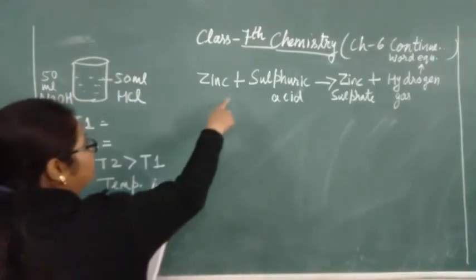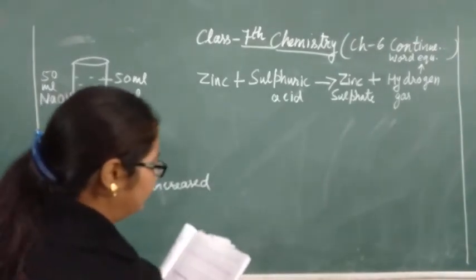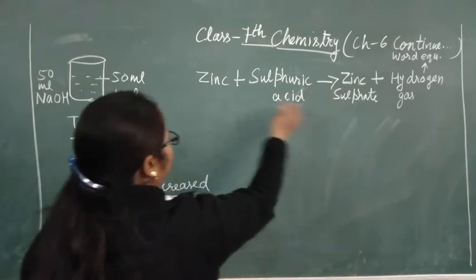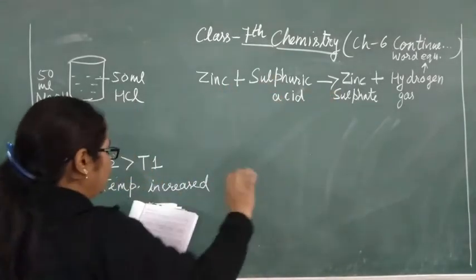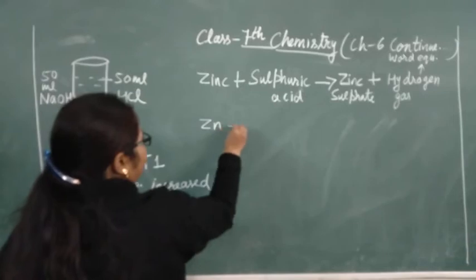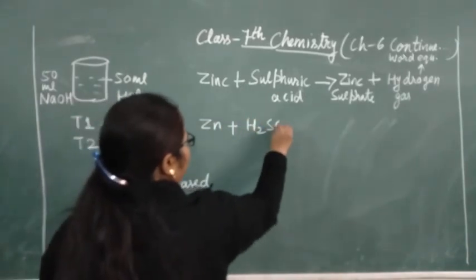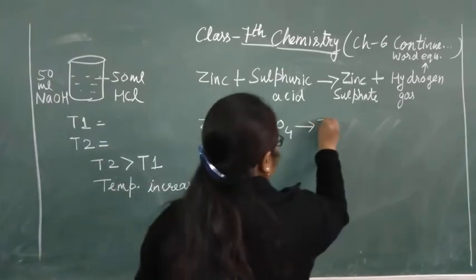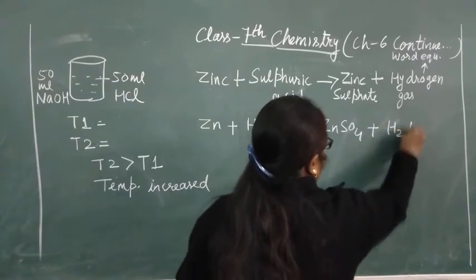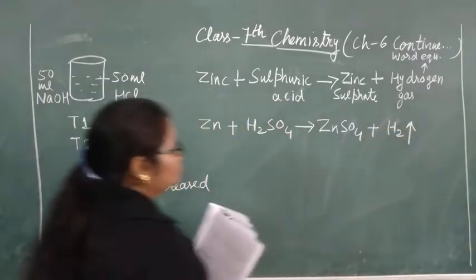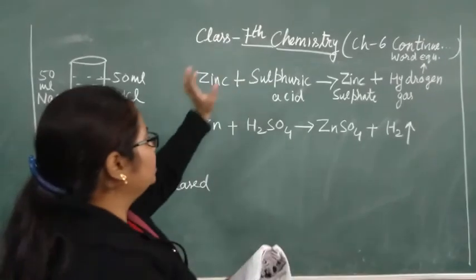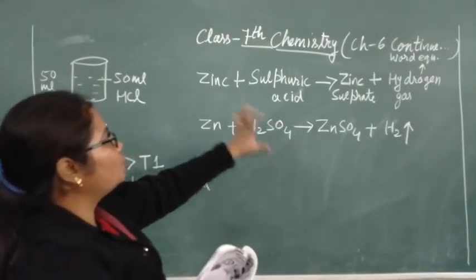The definition is: a chemical equation is the symbolic representation of a chemical reaction by using symbols and formulas. For example, in the place of zinc we write the symbol Zn, sulfuric acid formula is H2SO4, then we get zinc sulfate with formula ZnSO4, and hydrogen gas. This is the sign for gas. So this is called a chemical equation.